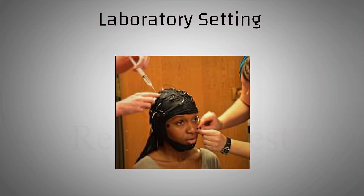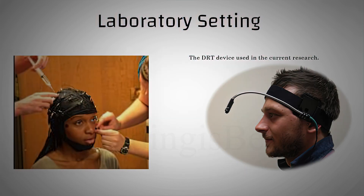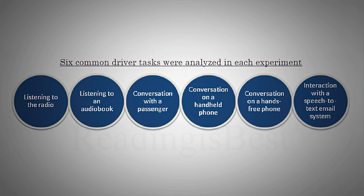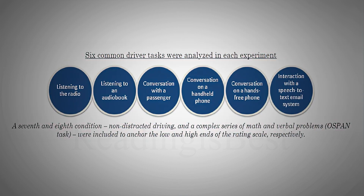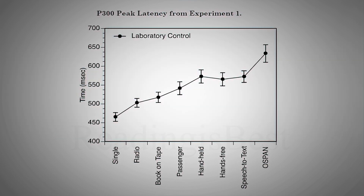First, let's talk about the laboratory setting. 38 participants were chosen from Utah University. A baseline of cognitive workload was measured where they had to perform a task without any distraction. Then participants had to engage in a series of distractions like listening to radio, listening to an audiobook, and talking on the phone while performing the task. The result concluded that as cognitive workload associated with performing an activity increased, the cognitive distraction associated with performing that activity while operating a motor vehicle also increased.